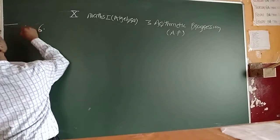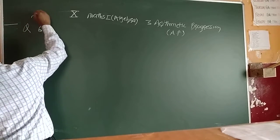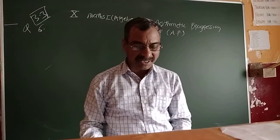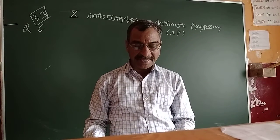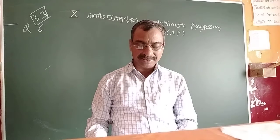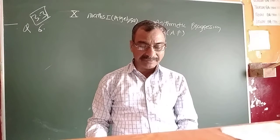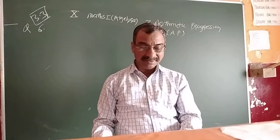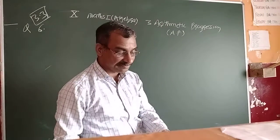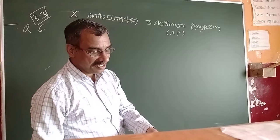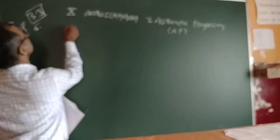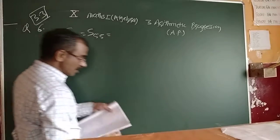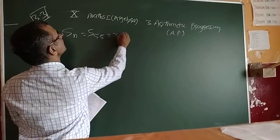Question 6 from 3.3: The sum of the first 55 terms of an AP is 3300. So here SN is given. The first 55 terms means S55 is equal to 3300.